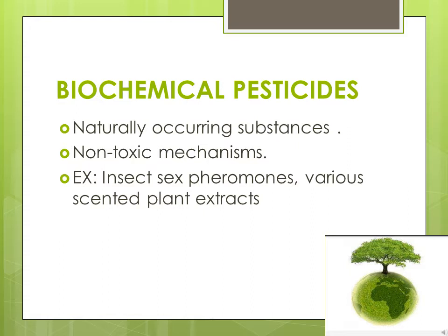Now I would like to discuss about biochemical pesticides. Biochemical pesticides are naturally occurring substances that control pests by non-toxic mechanisms. They include substances like insect sex pheromones that interfere with mating and attract insect pests to traps, as well as various scented plant extracts that attract insect pests to traps. Because it is sometimes difficult to determine whether a substance meets the criteria for classification as a biochemical pesticide, the EPA has established a special committee to make such decisions.